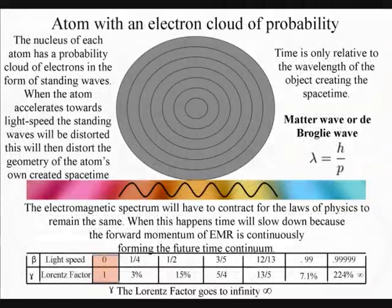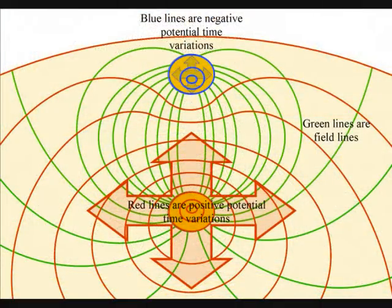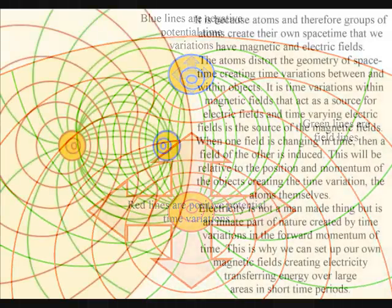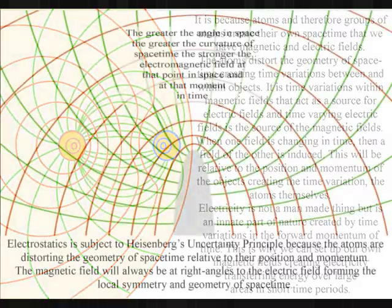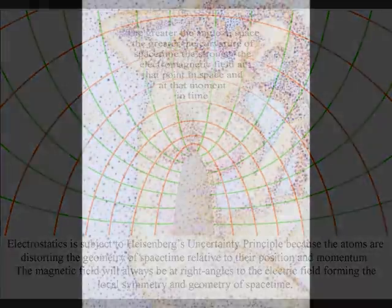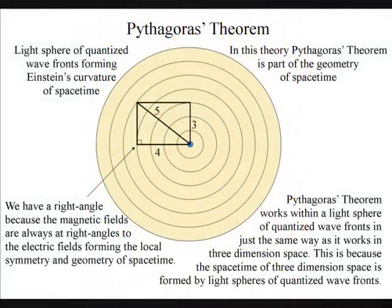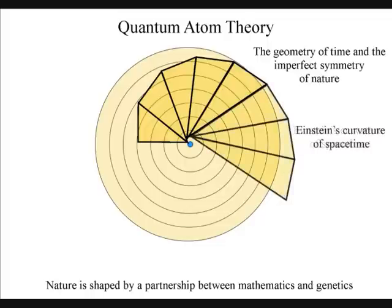The probability of the uncertainty principle is the same probability that the observer will have with any future event. It is because the atoms can distort the geometry of spacetime that we have electromagnetic fields. It is time variations within magnetic fields that act as a source for electric fields, and time varying electric fields induce magnetic fields. When one field is changing in time, then a field of the other is induced. This will be relative to the position and momentum of the object creating the time variation, the atoms themselves. The magnetic fields are always at right angles to the electric fields, forming the local spacetime symmetry and geometry.